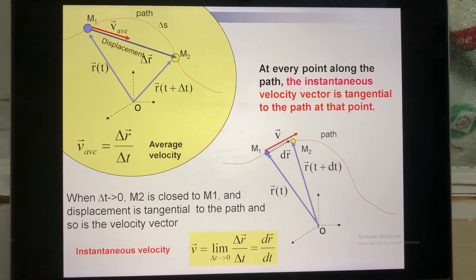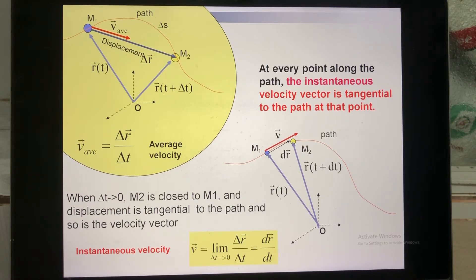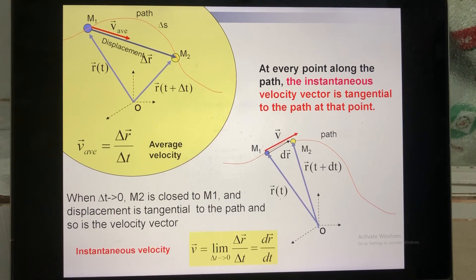When solving exercises, if you are unsure whether to calculate average or instantaneous velocity, focus on delta T. If the question asks you to calculate the velocity at a specific moment T equal to a number, that is instantaneous velocity. If there is an interval of time given, that corresponds to average velocity. Also, if you are given expressions for x(t) or y(t), you typically need to calculate instantaneous velocity.